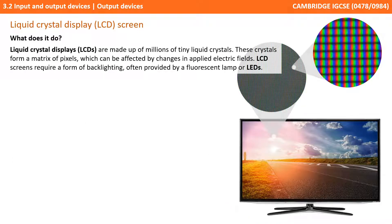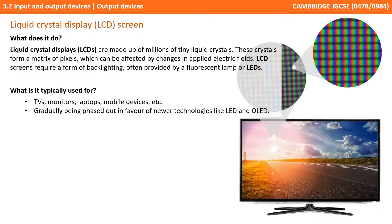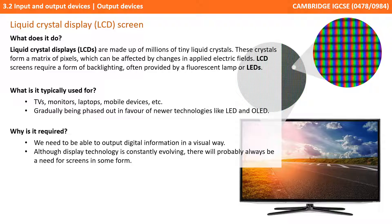Next up, we're going to look at two types of screen technology. The first is liquid crystal display or LCD screens. These are made up of millions of tiny liquid crystals that form effectively a matrix of pixels, which can be affected by changes in applied electric fields. LCD screens require some form of backlighting, often produced by a fluorescent lamp or LED. They're used for TVs, monitors, laptops and mobile phones, but they're gradually being phased out in favour of newer technologies such as LED and OLED. We need to be able to output digital information in a visual way, and although display technology is constantly evolving, there will probably always be a need for visual display screens in some form.